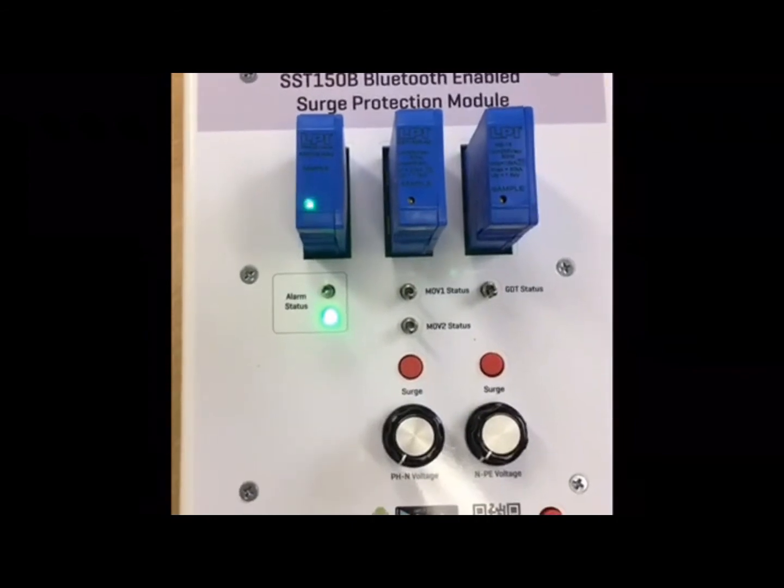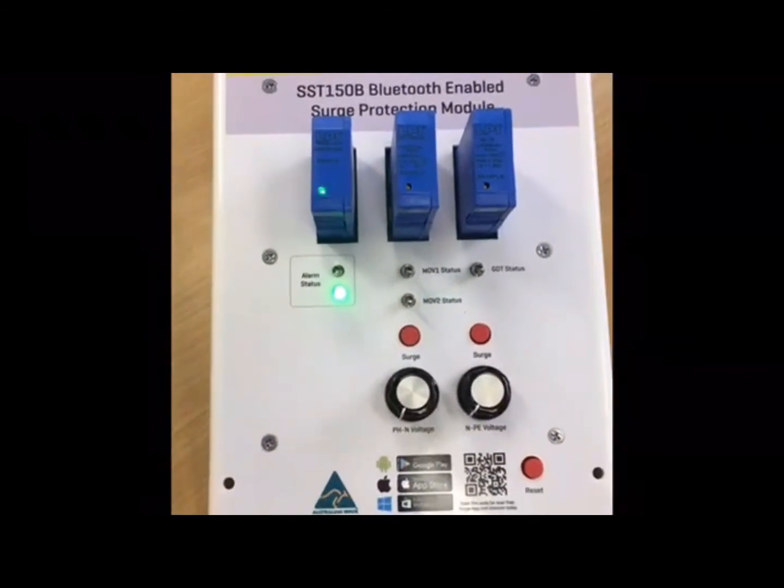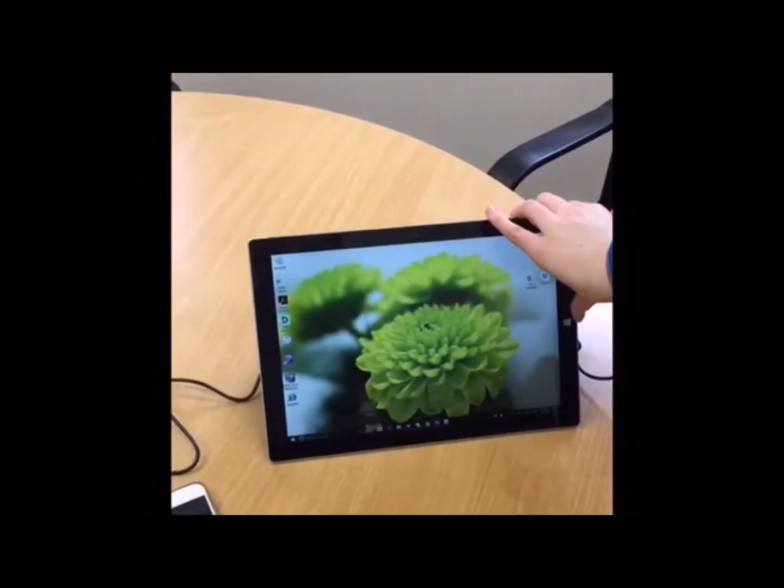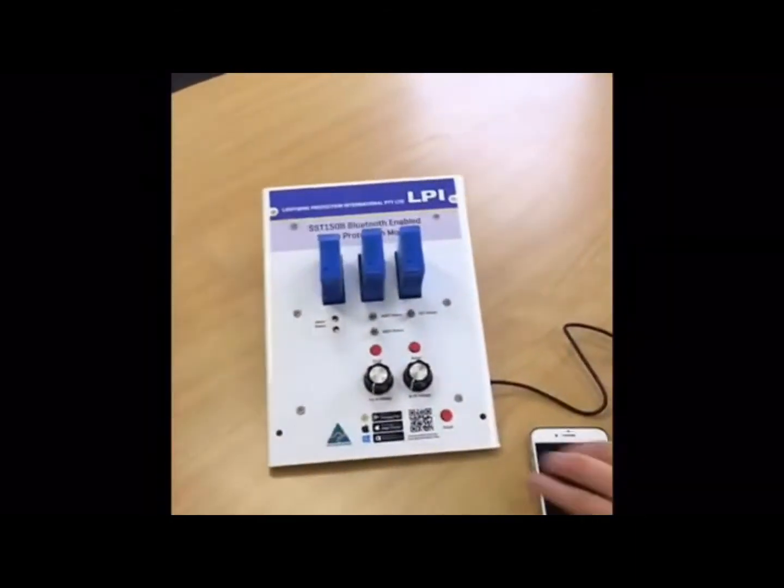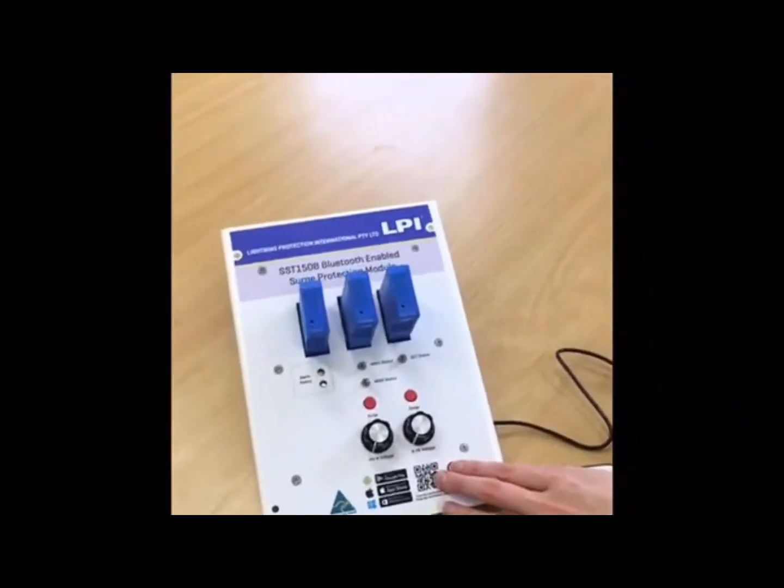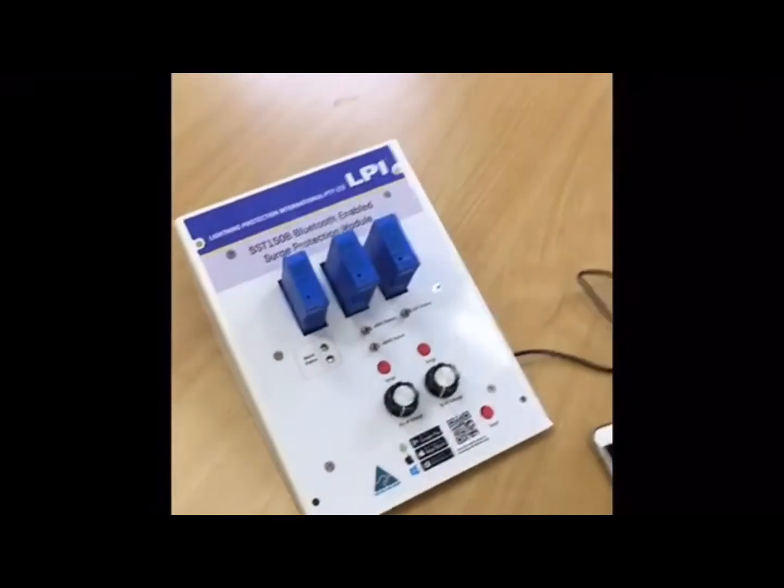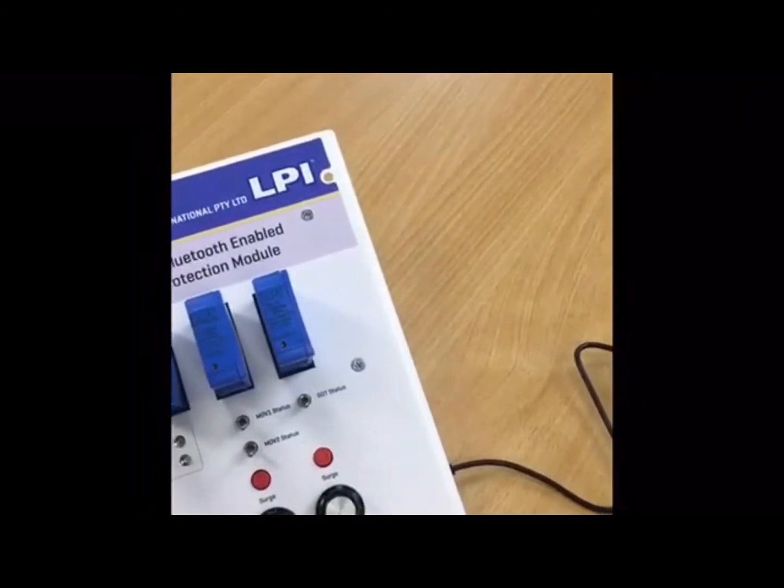To reset information within the SST150B and NE15B, disconnect power and allow a couple of seconds. While holding down the reset button, reconnect the power and allow 5 seconds, then release the reset button. This will clear all values for all units.